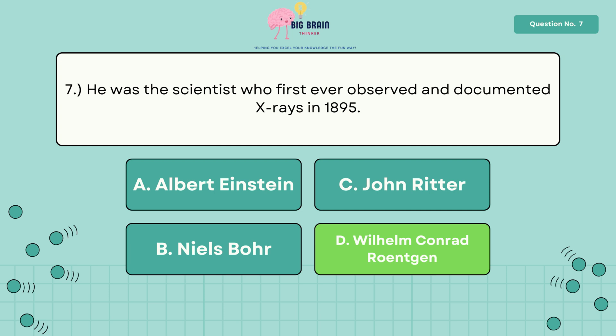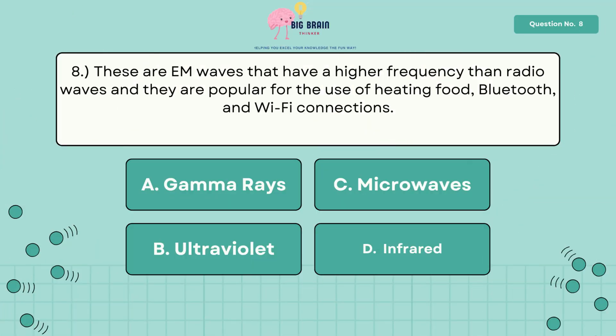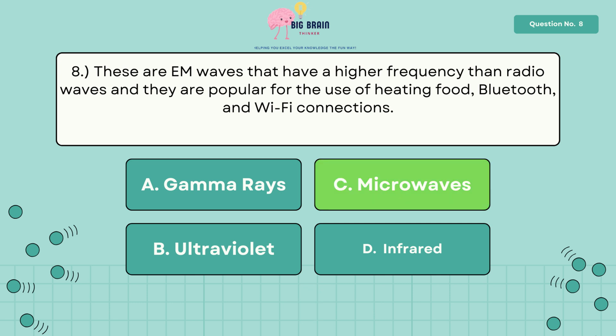Eight, these are EM waves that have a higher frequency than radio waves, and they are popular for the use of heating food, Bluetooth, and Wi-Fi connections. The answer is letter C, microwaves.